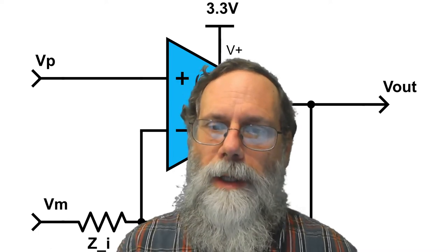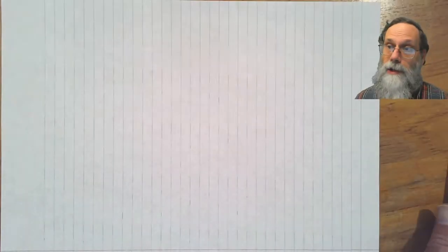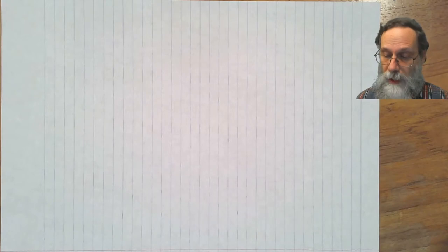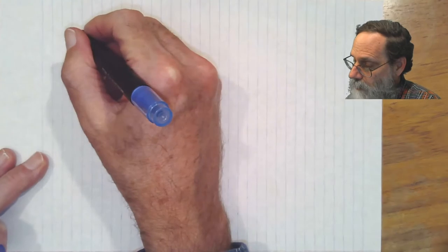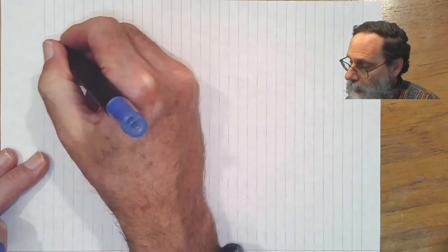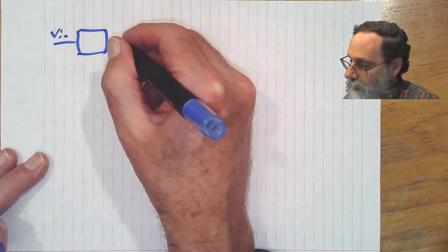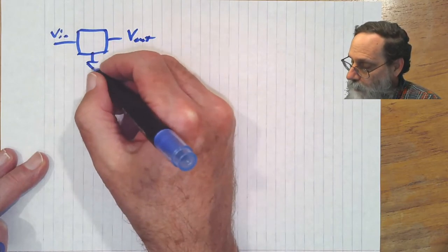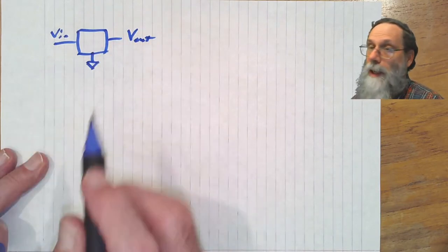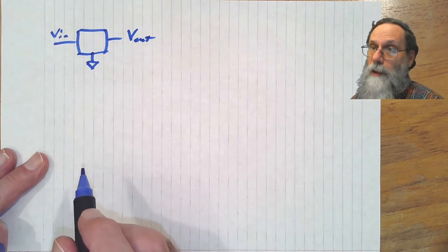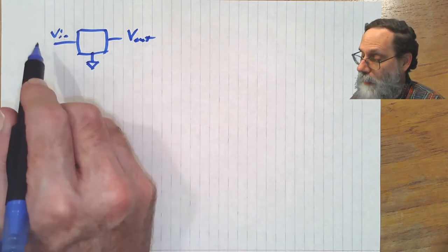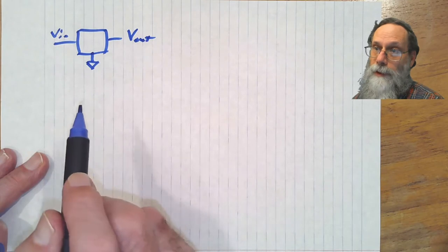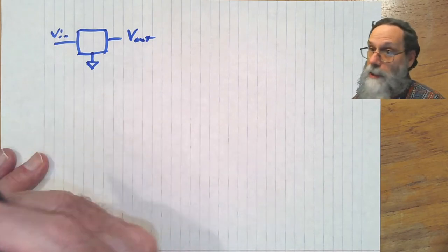A filter is not just an impedance. A filter is a three-terminal device. You can think of it as a box which has an input and an output, and it has to have some sort of reference for that input and output to be with respect to. So it's a three-terminal device - input voltage, output voltage, and it's not just two things.